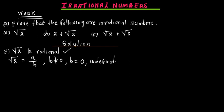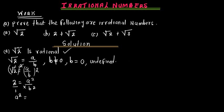Since we have root of two equaling a over b, we can square both sides, so that the root and the square cancel. We are going to have 2 equal to a squared over b squared. Cross-multiplying, we are going to have a squared equal to 2b squared.